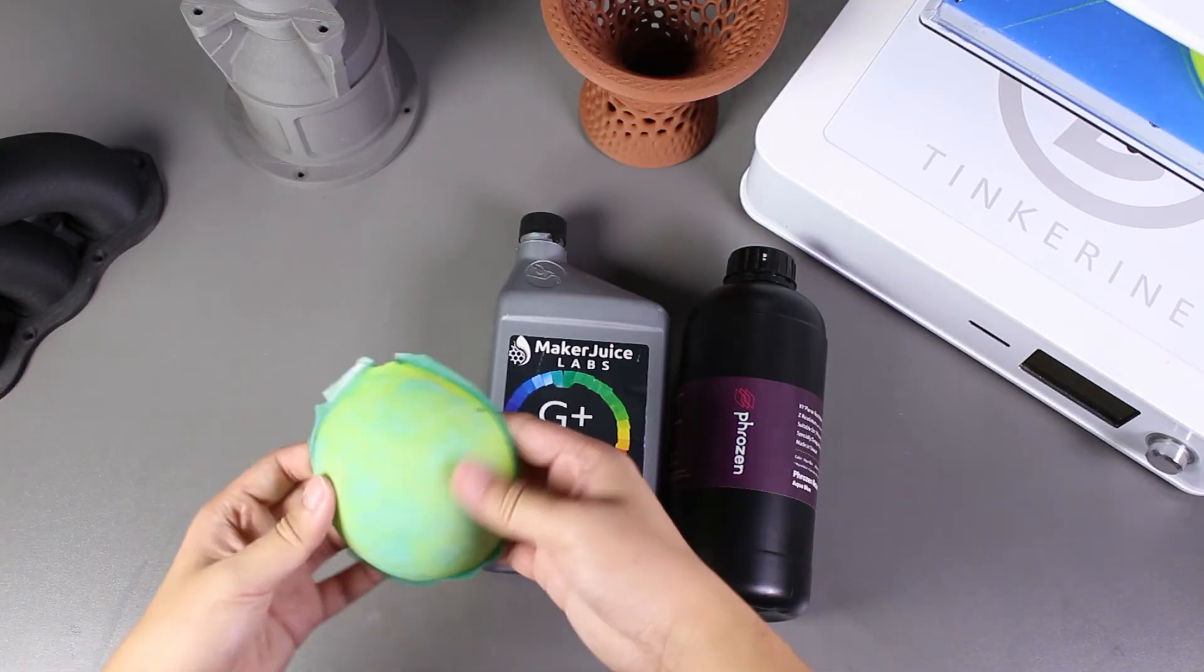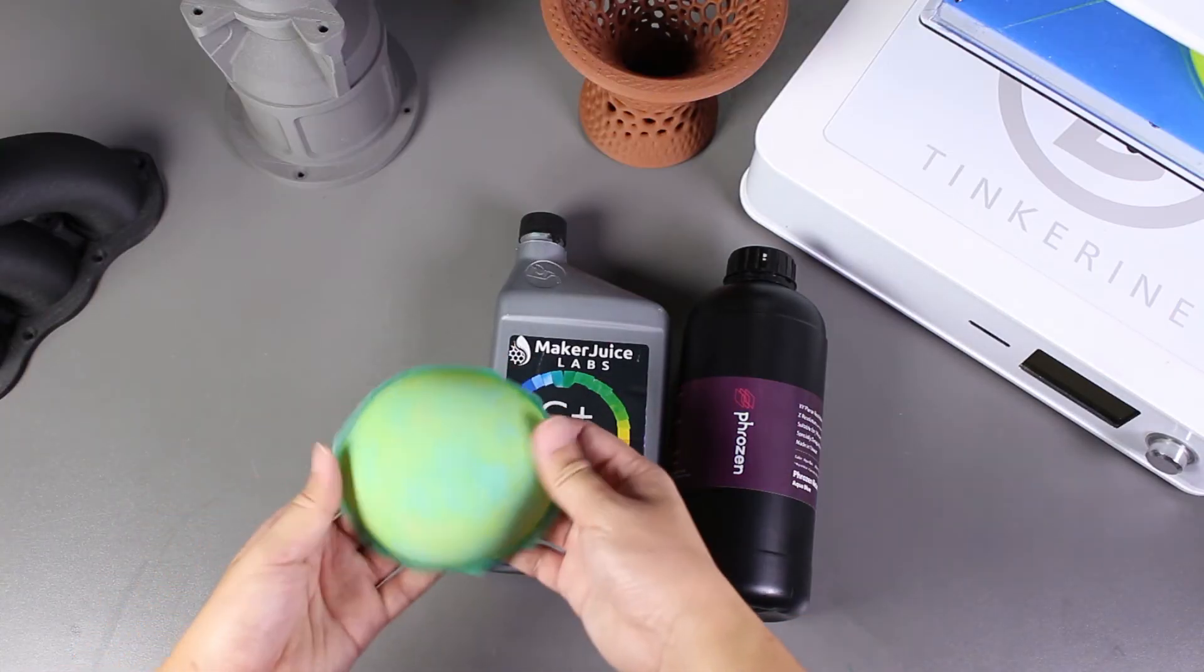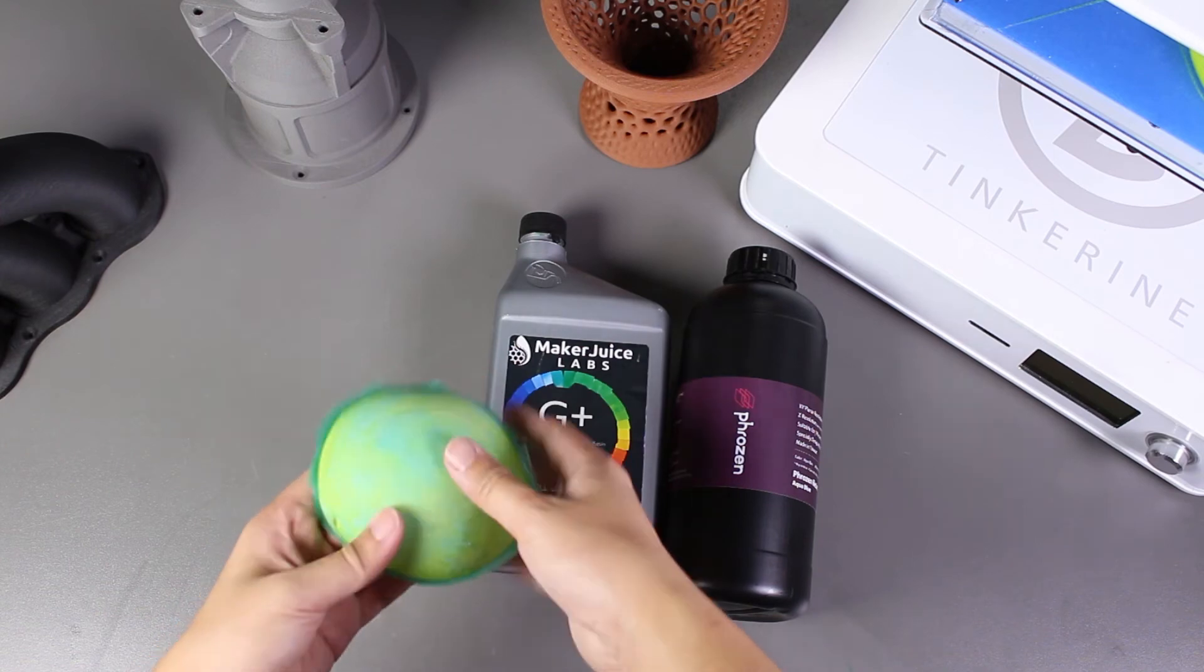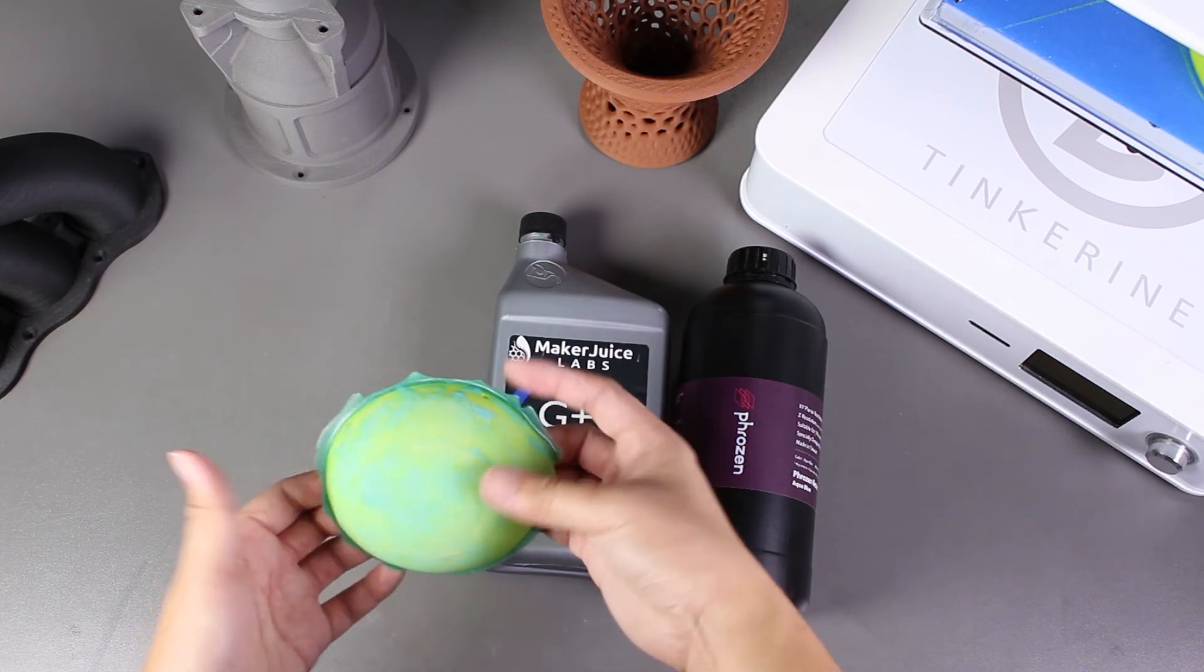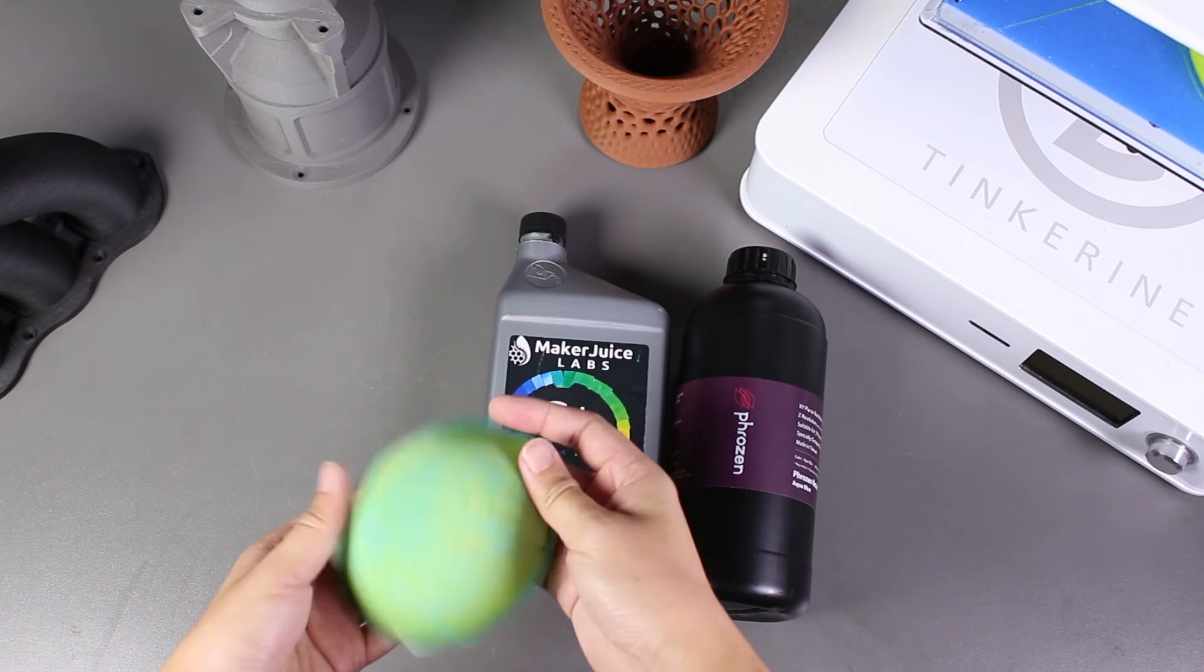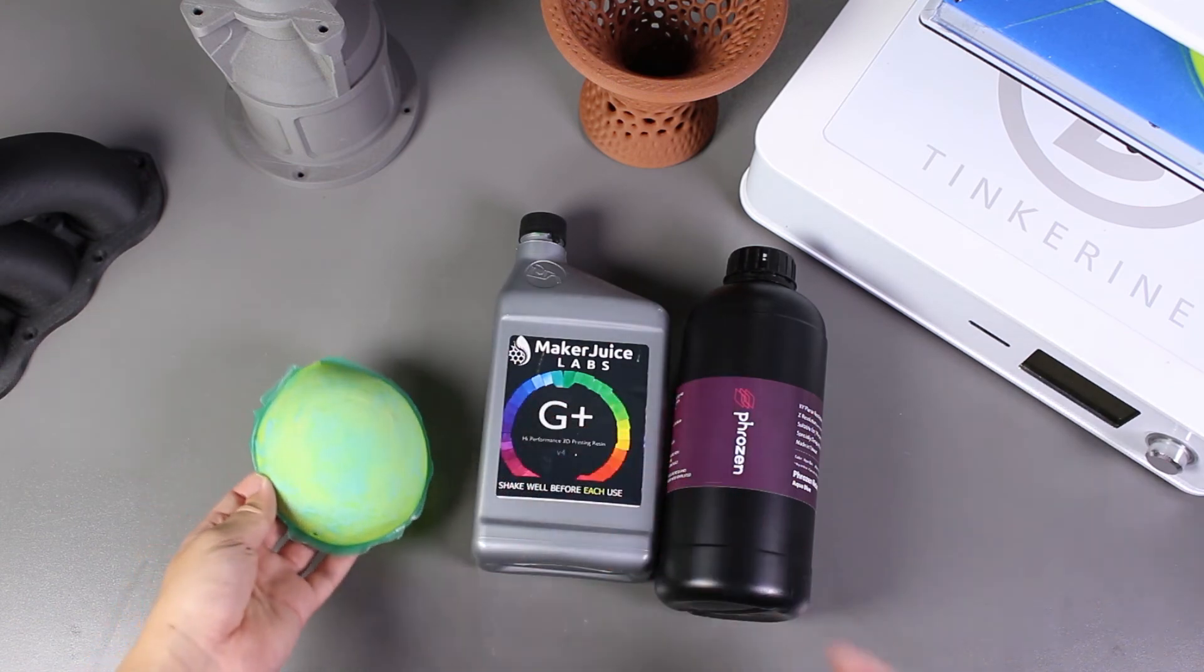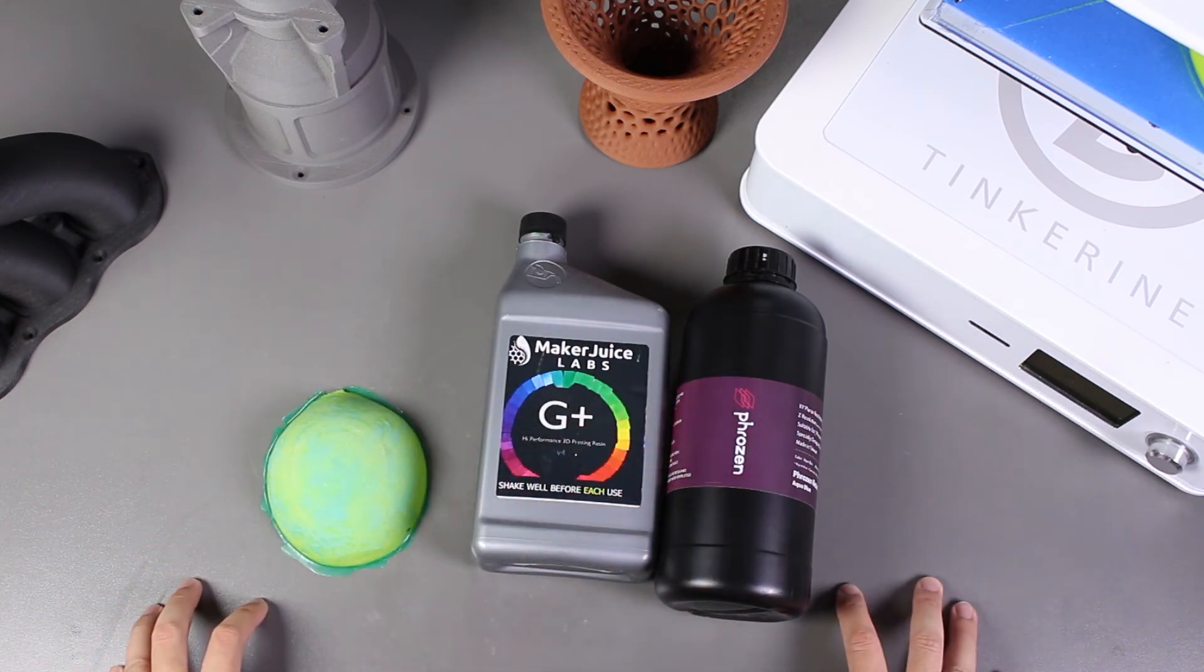Well, there we have it. We used 3D printing resin to smooth out our 3D printed part and I would say it turned out pretty nice. It's quick and easy to do. The whole process probably took 15 to 20 minutes to finish depending on how fast the resin cures. I would definitely recommend this method if you have some resin lying around.